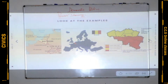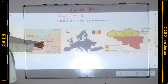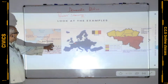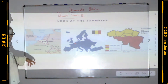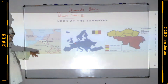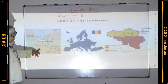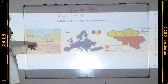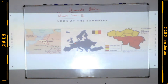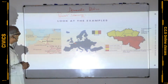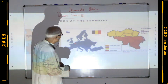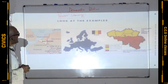Now let us see the map of Belgium. This country Belgium — in the north, Netherlands; in the east, Germany; in the south-east, Luxembourg; in the south, France. In the west, the country is touching the North Sea, which is part of the Atlantic Ocean. So what is the social structure of Belgium?